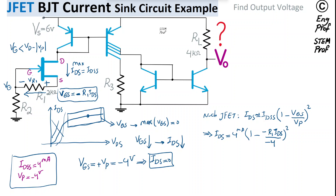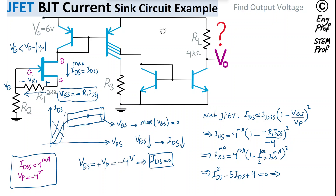With R1 = 2 kΩ, substituting gives IDS = 4 mA × (1 − (2k/4)·IDS)² = 4 mA × (1 − 0.5·IDS_mA)². Expanding and solving this second-order equation yields IDS² − 5·IDS + 4 = 0, where IDS is in milliamps.